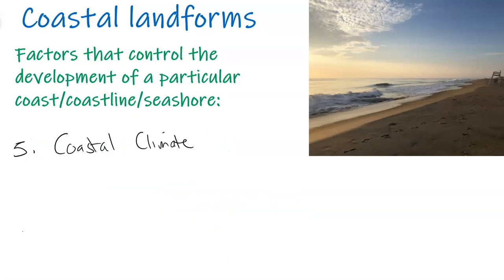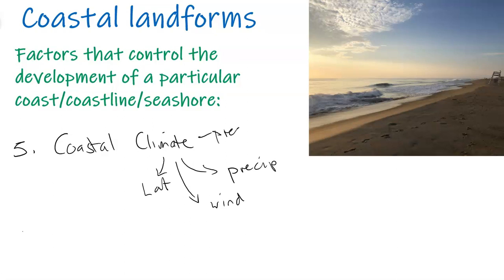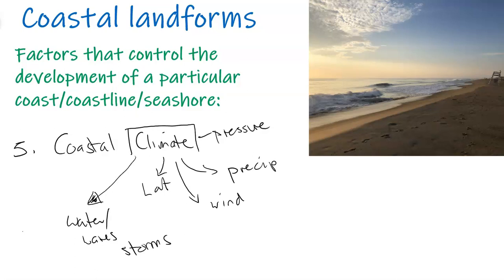The final factor in coastal development and formation is climate. Based on latitude, based on precipitation, based on wind direction and pressure, based on the movement of water, waves, and storms — climate is a big thing that can link up to other factors as well. In combination, this is a very large topic that can control the formation of the coastline.